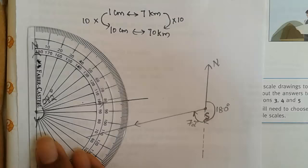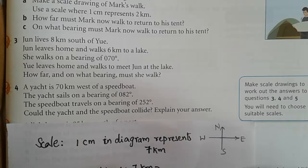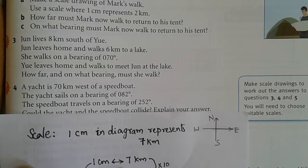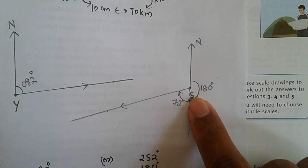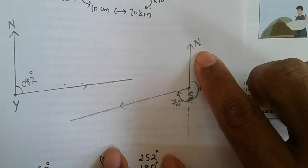Now the same way, it is given that the speedboat travels on a bearing of 252 degrees. So here let us assume the position of the speedboat and then draw north from there.